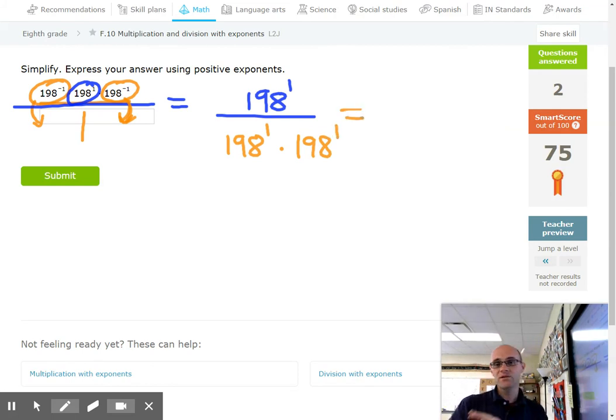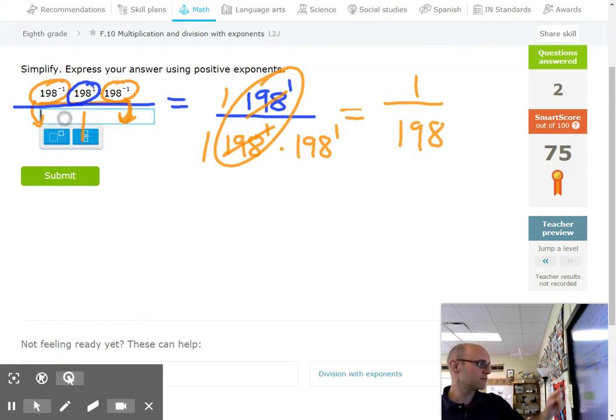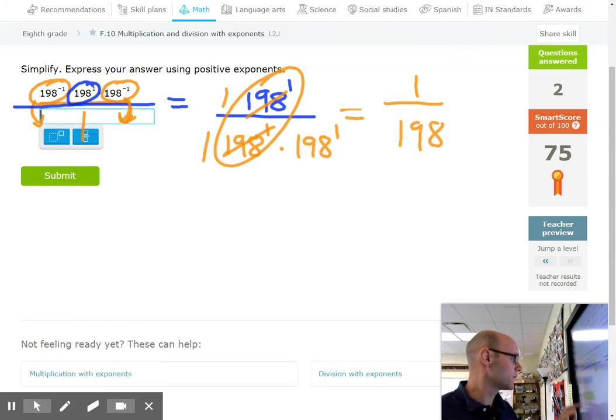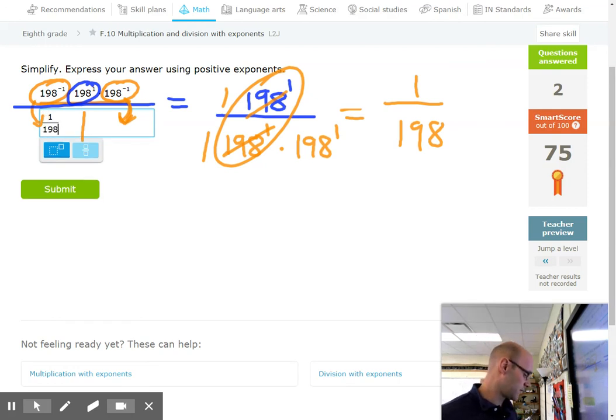And now everything has a positive exponent. So now you can start talking about what reduces because everything is where it officially belongs. So let's reduce things. I see one pair of 198s. You know, any number divided by itself reduces to one. So these would cancel. All I'd have left on the top is a one. On the bottom, I still have a 198. So let's type that one in and see if there isn't maybe one last harder problem. All right. One over 198. Let's look for a harder one here.